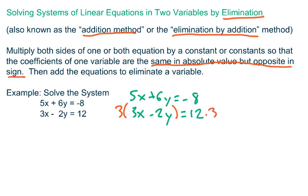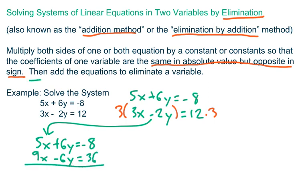Why would you do that? Well, if you do that, then your system can be rewritten like this. Your top equation doesn't change: 5x plus 6y equals negative 8. The second equation becomes 9x minus 6y equals 36. Now, this is what I'm getting at. Notice that if you look at the coefficients of y, they're the same in absolute value, 6, but they have opposite signs. So if you were to take these two equations and add them, adding down the column so to speak, the y terms would add out to 0.